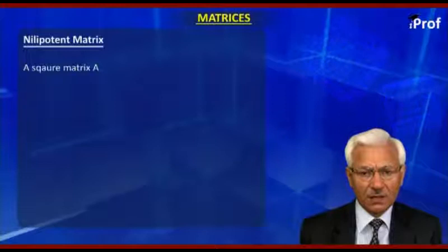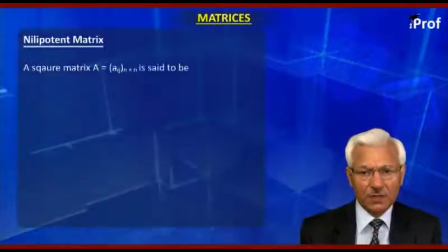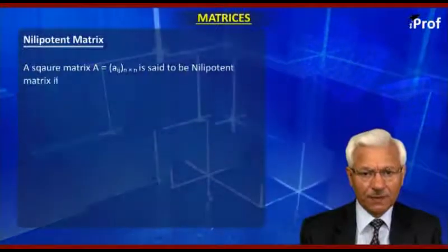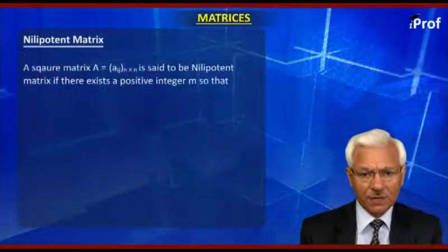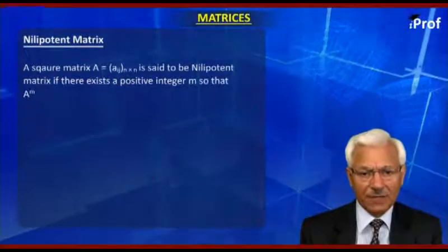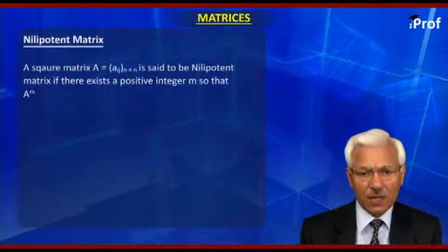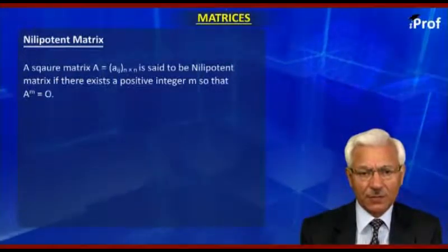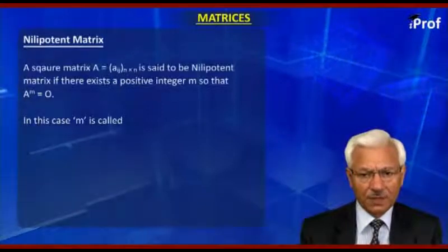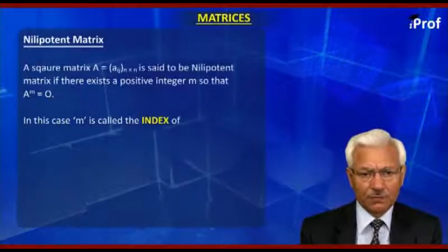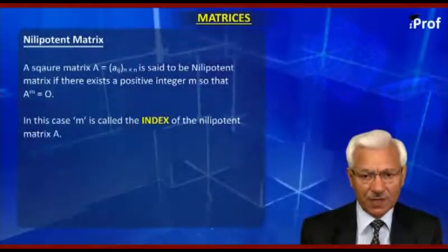Another concept is the nilpotent matrix. A square matrix A of order N×N is said to be a nilpotent matrix if there exists a positive integer M such that A raised to the power M — that is A multiplied by itself M times — gives us a zero matrix. M is called the index of the nilpotent matrix A.